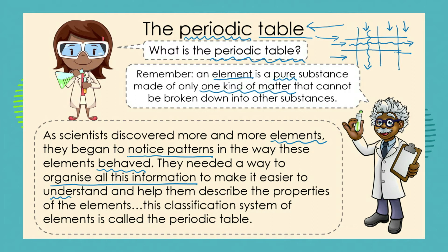If we organise them and classify them, we will be able to understand them better. It will also help us, said the scientist, describe the properties of the elements. And this classification system of elements is called the periodic table.